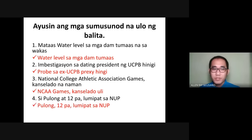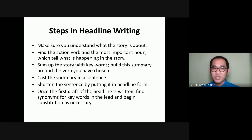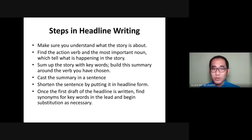In addition, here are other steps in writing a headline. First, make sure you have understood what the story is all about. Find the action verb and most important noun, which tell what is happening in the story. Sum up the story with keywords. Build the summary around the verb you have chosen. Cast the summary in sentence form. Shorten the sentence by putting it in heading form. Once the first draft is written, find synonyms or keywords in the lead and begin substitution as necessary.